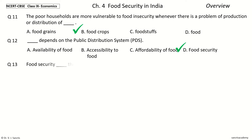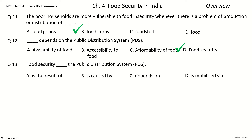Question 13: Food security Dash the Public Distribution System, PDS. The options are is the result of, is caused by, depends on. Your time to choose. And the answer is depends on. So, food security depends on the Public Distribution System, PDS.